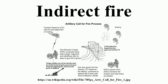NATO defines indirect fire as fire delivered at a target which cannot be seen by the aimer. The implication is that azimuth and elevation aiming is done using instrumental methods. Hence indirect fire means applying firing data to azimuth and elevation sights and laying these sights.